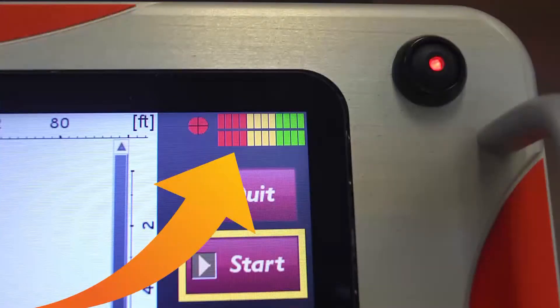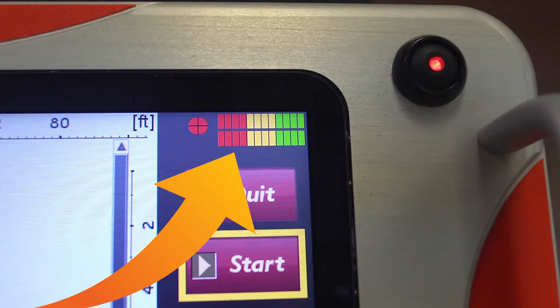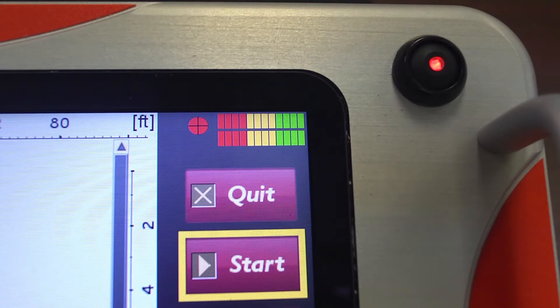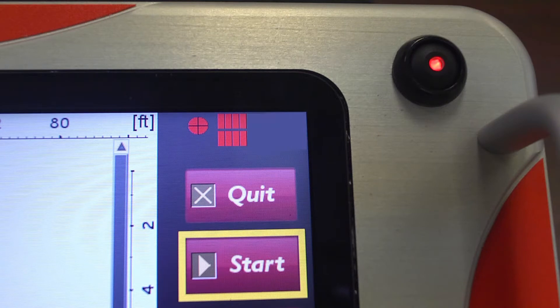The battery status indicator can be found to the right of the GPS indicator. The color bar indicates battery strength. Green indicates high charge, yellow indicates medium charge, and red indicates low charge.